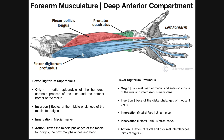Flexor digitorum profundus is going to be on the medial side, again because it's on the pinky side. This muscle is very similar to flexor digitorum superficialis. Its origin is on the proximal three-quarters of the medial and anterior surface of the ulna, and then on the interosseous membrane. So it's going to originate on the ulna, and between the ulna — which is medial — and the radius, which is the lateral bone, there's a bundle of connective tissue: the interosseous membrane that holds those two bones together. Part of the origin of this muscle is going to be on that interosseous membrane, so we can't actually see it — it's deep to it.